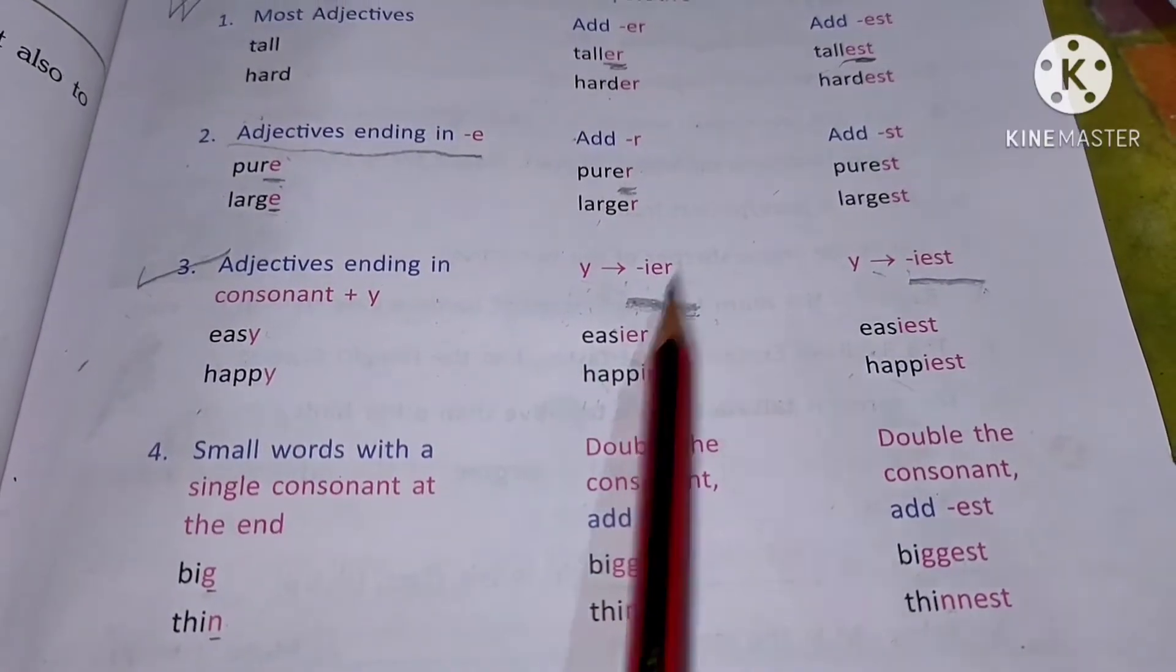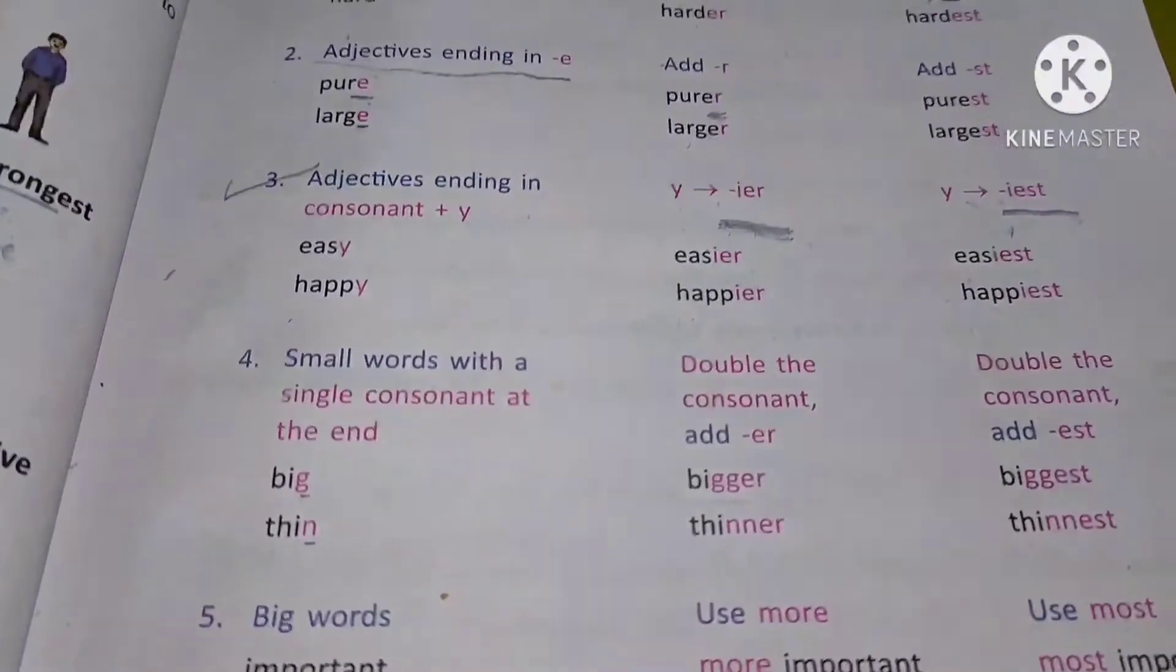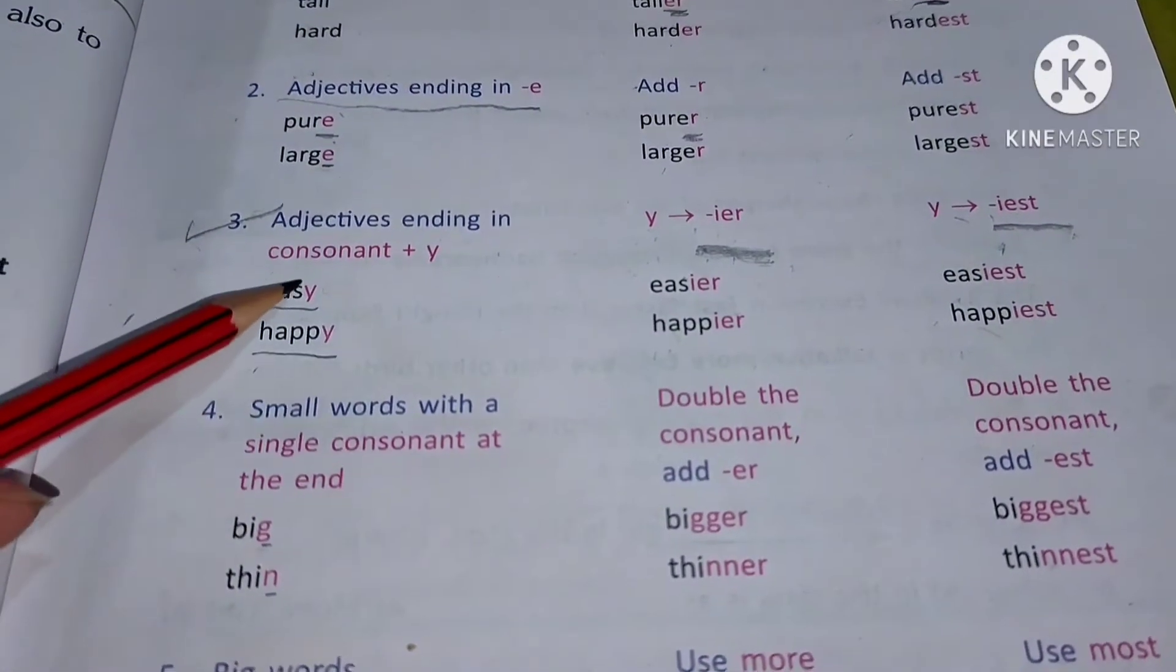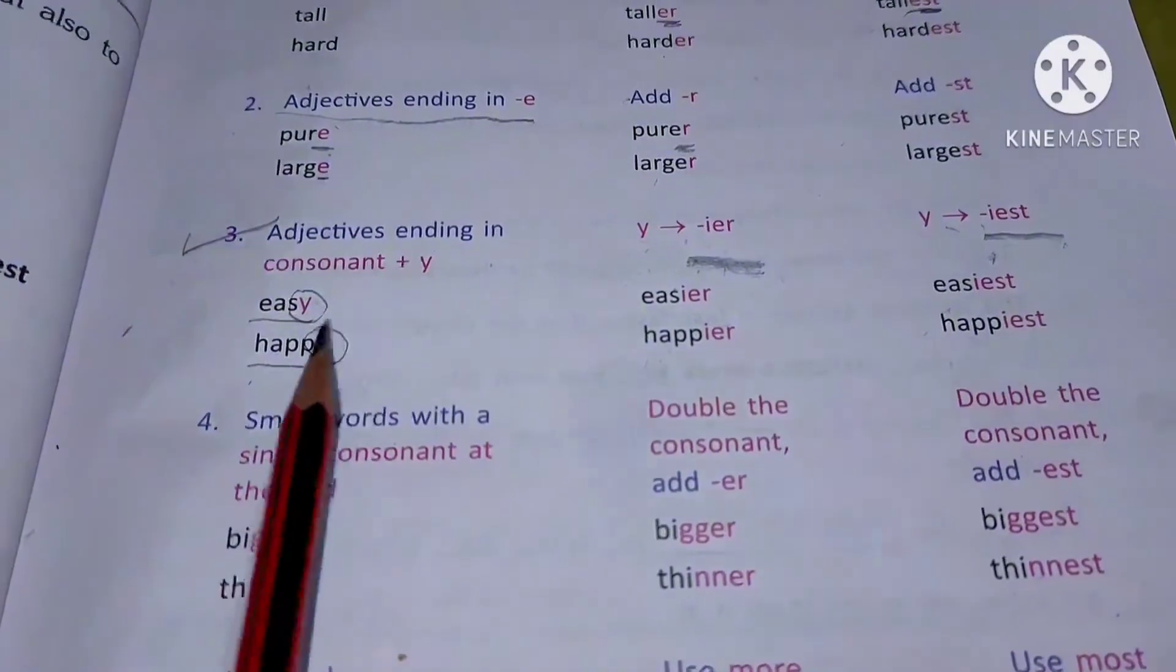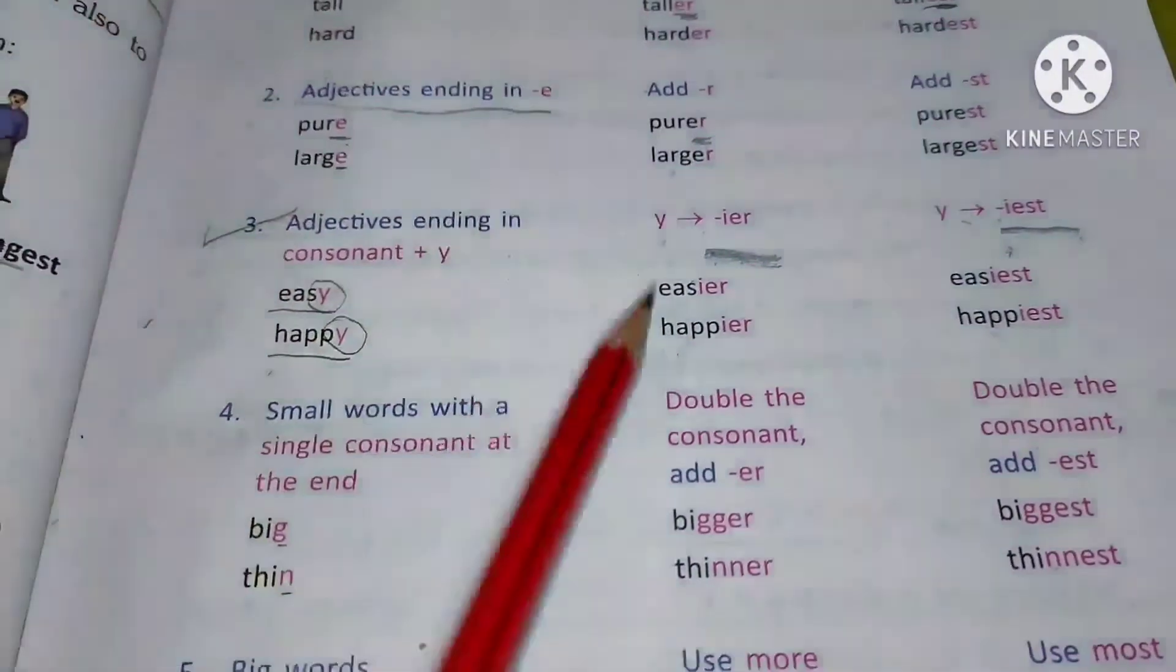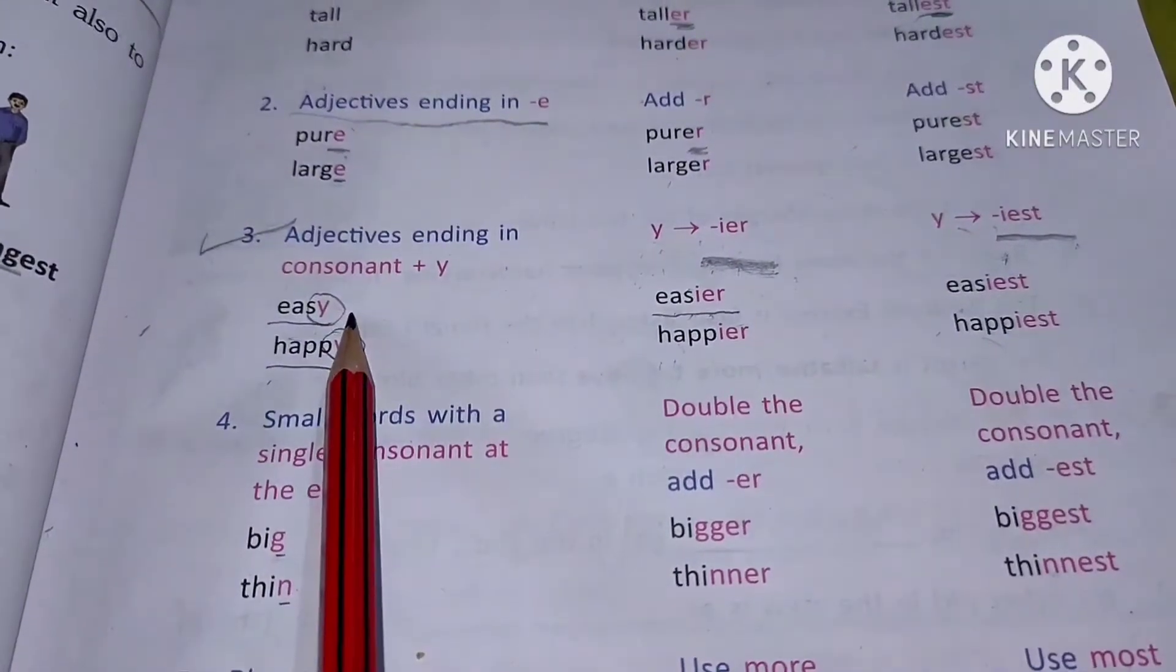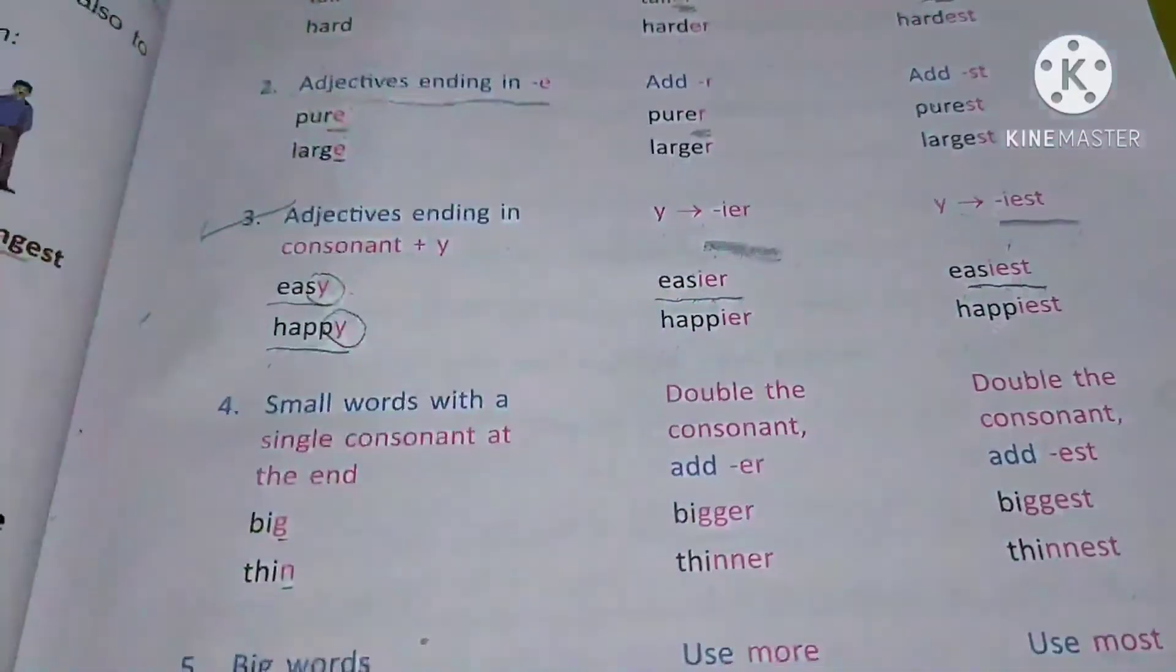Comparative mein i-e-r, superlative mein i-e-s-t. So the first word is easy, the second is happy. As you can see it is ending in y, so easy when used in comparative becomes easier by adding i-e-r and removing y, and in superlative i-e-s-t removing y.